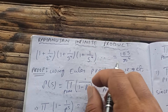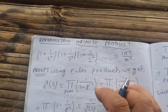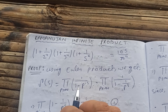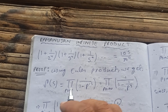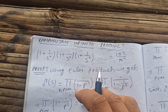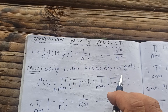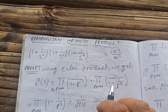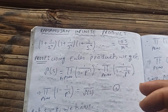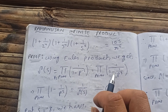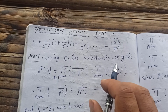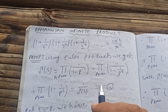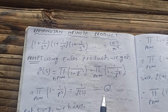We are trying to prove this using the Euler product for the zeta function. We have that ζ(s) equals the product over primes P of 1/(1 − P^(−s)). Rewriting, this is the product over primes of 1/(1 − 1/P^s). Flipping it, we get that the product over primes of (1 − 1/P^s) equals 1/ζ(s). Let's call this equation 1.